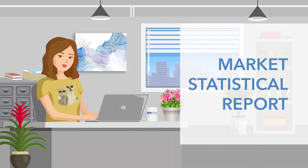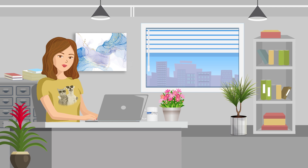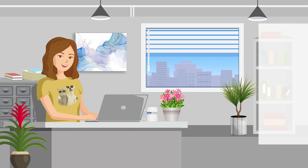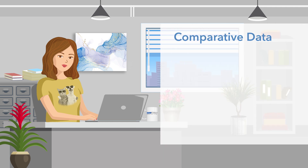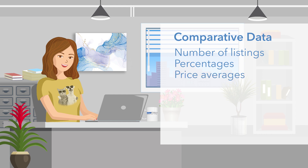In this video you will learn how to create a quick and easy market statistical report on Paragon. This is an awesome tool to generate all sorts of reports for your client. It displays number of active listings, average list price, median list price, average days on market, and median days on market by property class and bedrooms for the current active market. Properties listed within a specific date range are also compared to properties sold and expired within the same date range. Comparative data includes number of listings, percentages, price averages, price medians, average days on market, and median days on market by property class and bedrooms.